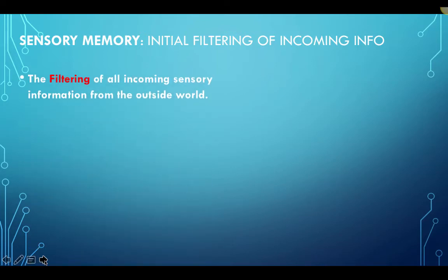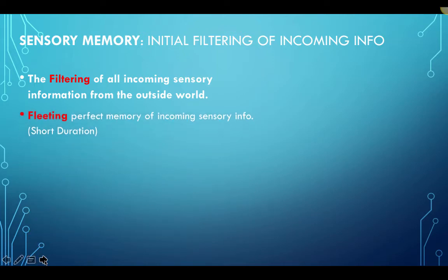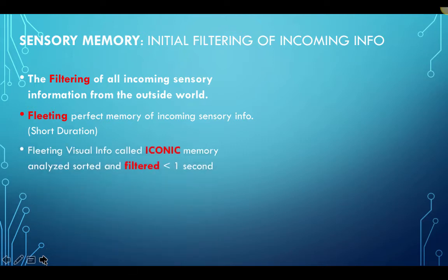The sensory memory is an initial filtering of all incoming information from the outside world — things we see, taste, smell, touch, and hear. It is a very fleeting memory — a perfect, picturesque, photographic memory of incoming sensory information, but with a very short duration. Fleeting visual information is referred to as iconic memory: a photographic memory of everything in our visual field, but it lasts less than one second.